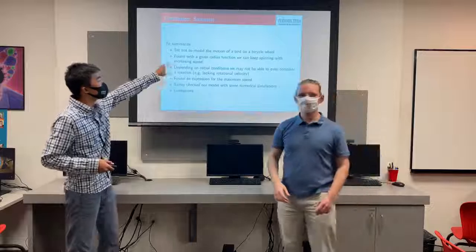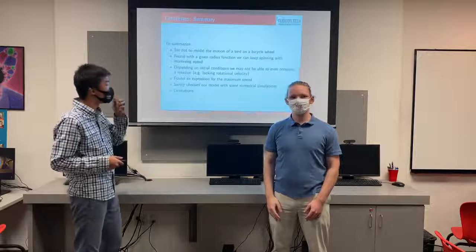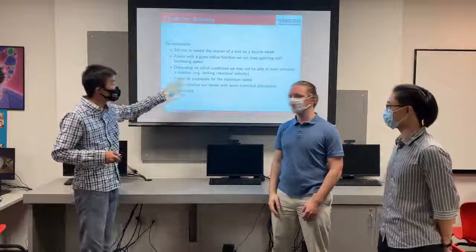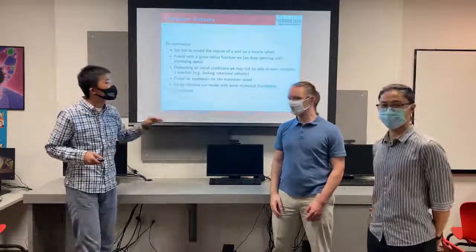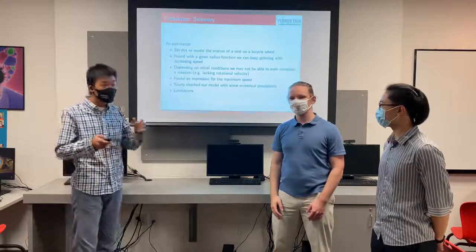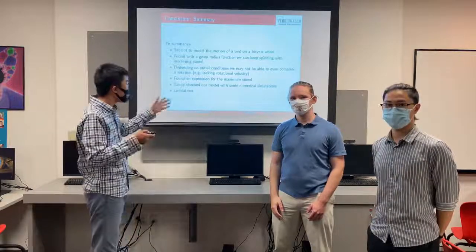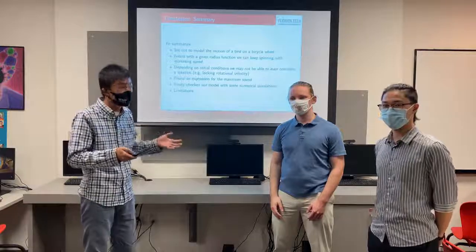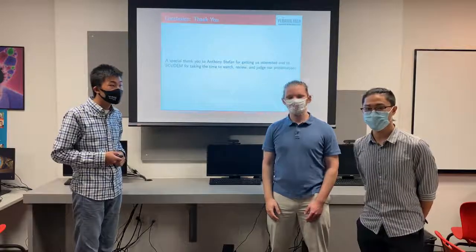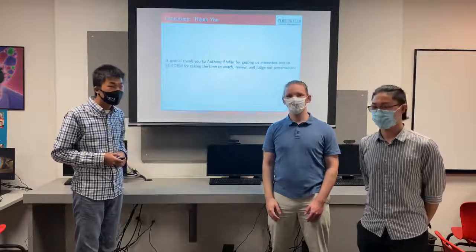To summarize: we set out to model the motion of the bird on the bicycle wheel, and found that with a given radius function we can keep it spinning with increasing speed in the ideal condition. Depending on initial conditions we may not complete a rotation due to lack of rotational velocity. We found an expression for maximum speed and sanity-checked the model with numerical simulations. A key limitation is the Heaviside function: the bird does not move in very rigid motions, so we cannot account for those scenarios. Special thanks to our coach Anthony Staffan, and to every reviewer and our judges. Thank you very much.